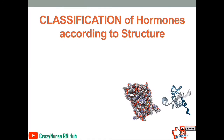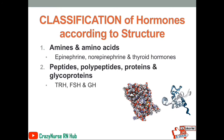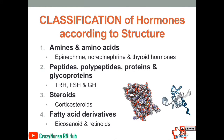Next is the classification of hormones according to structures. Hormones are classified according to amines and amino acids. The next classification is peptides, polypeptides, proteins, and glycoproteins — examples include thyrotropin-releasing hormone, follicle-stimulating hormone, and growth hormone. Next, we have the steroids classification, under which we have corticosteroids. Next is fatty acid derivatives, under which we have eicosanoids and retinoids.